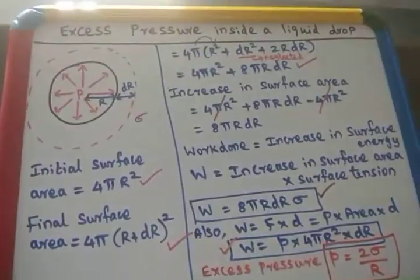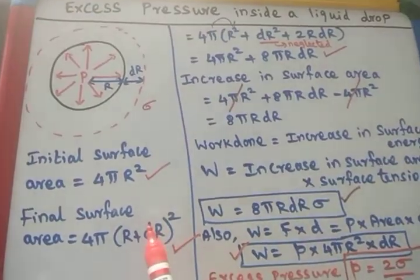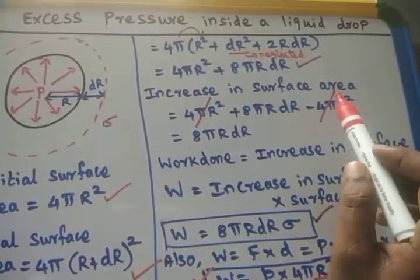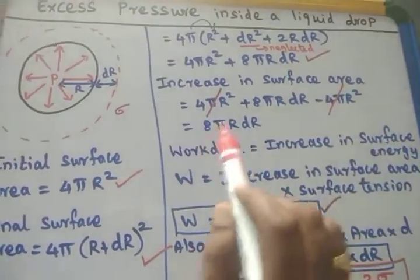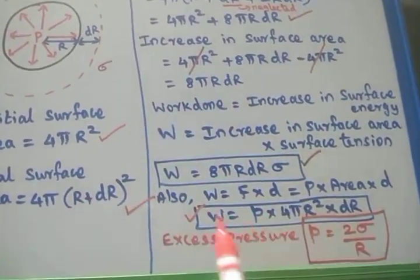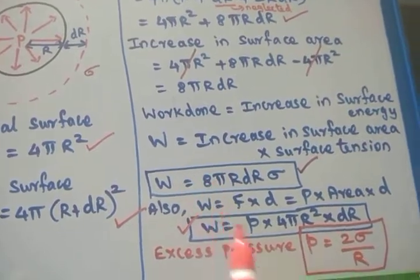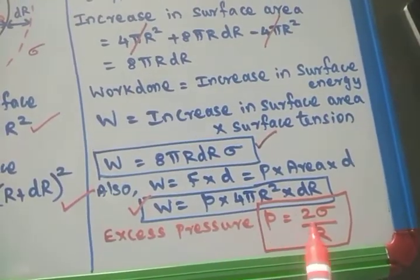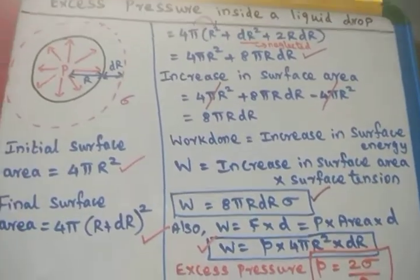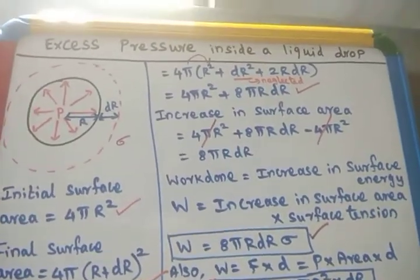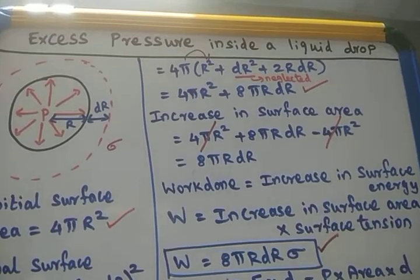So to summarize: calculate the initial surface area, then the final surface area, then the increase in surface area. Use that to calculate the work done via surface energy, then equate with the normal work done calculation. We get the answer: P is equal to 2 sigma by R. This is the excess pressure inside a liquid drop.